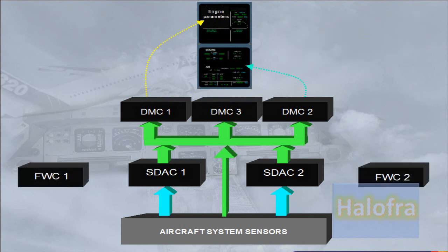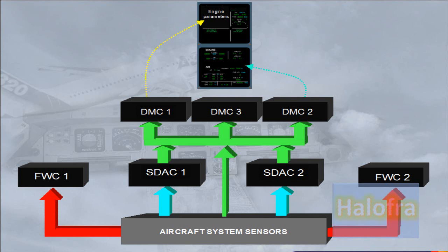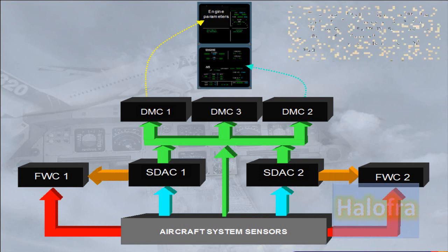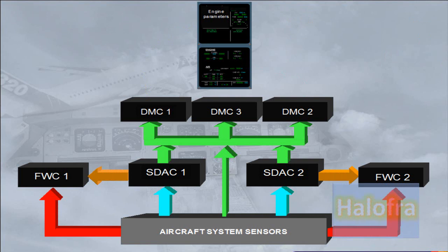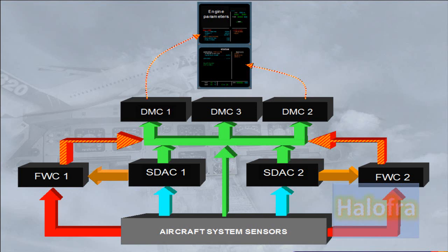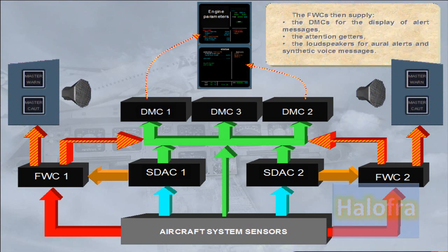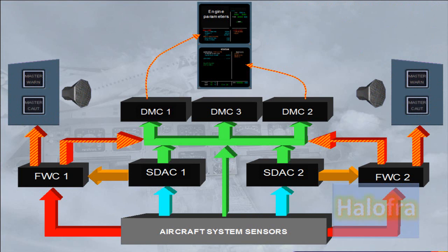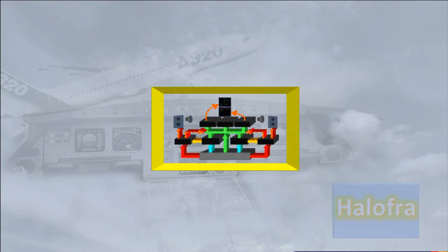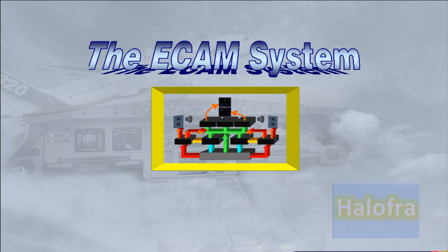Two identical flight warning computers, FWC, receive data from the aircraft system sensors to generate red warnings, and from the SDACs to generate amber cautions. The FWCs then supply the DMCs for the display of alert messages, the attention-getters, and the loudspeakers for aural alerts and synthetic voice messages. All the components shown can be collectively called the ECAM system. We will study the use of the ECAM system in a separate module.